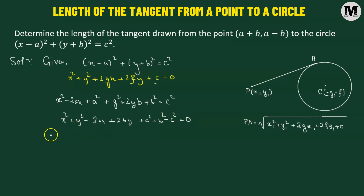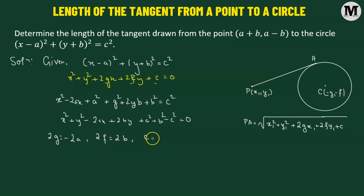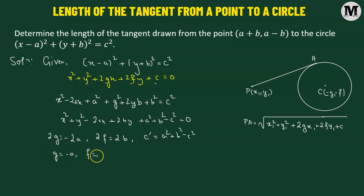Comparing with the general form, we get 2g equals negative 2a, 2f equals 2b, and the constant — let's call it c prime — equals a squared plus b squared minus c squared. Therefore, g equals negative a, f equals b, and c prime equals a squared plus b squared minus c squared.